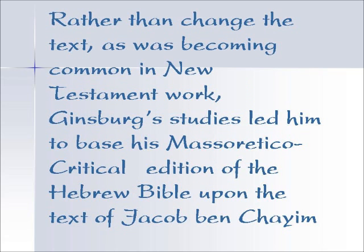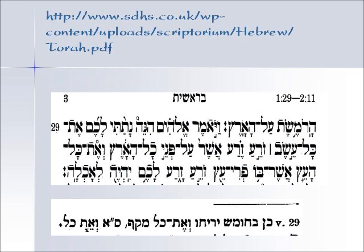Rather than going in and amending the text — which was commonly practiced in New Testament work — Ginsburg wrote a document, available online, footnoting all the different changes and showing all the documents. He used about 75 different documents for his recension, making footnotes saying: in these documents it's written this way, and in these other documents it's written another way. His critical edition of the Hebrew Bible was based on the work of Ben Chaim and was published in the 1800s in England.